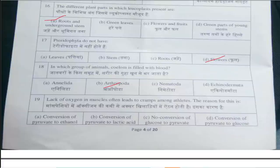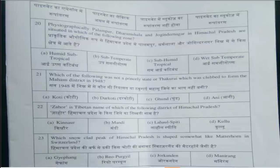Nineteenth question is: Lack of oxygen in muscles often leads to cramps among athletes. The reason for this is — answer is option B, Conversion of pyruvate to lactic acid. Lactic acid formation is the reason cramps occur. Next is the twentieth question: Physiographically, Palampur, Dharamshala and Joginder Nagar in Himachal Pradesh are situated in which zone? The answer is option A, Humid Subtropical.